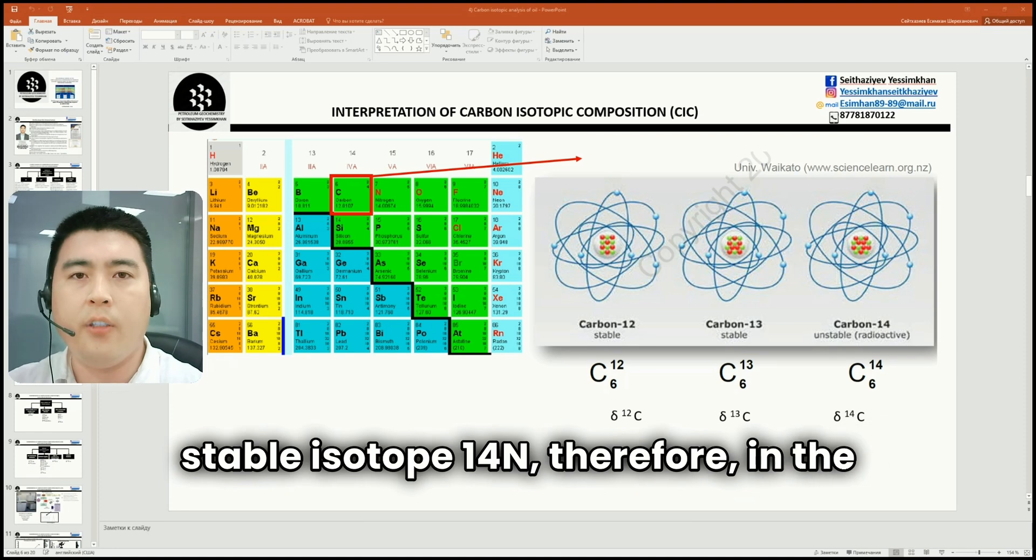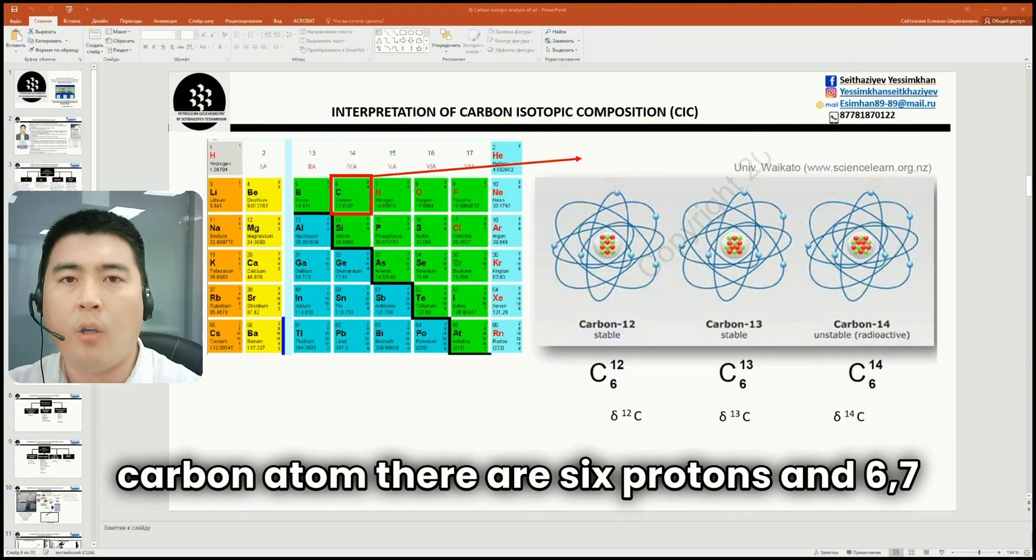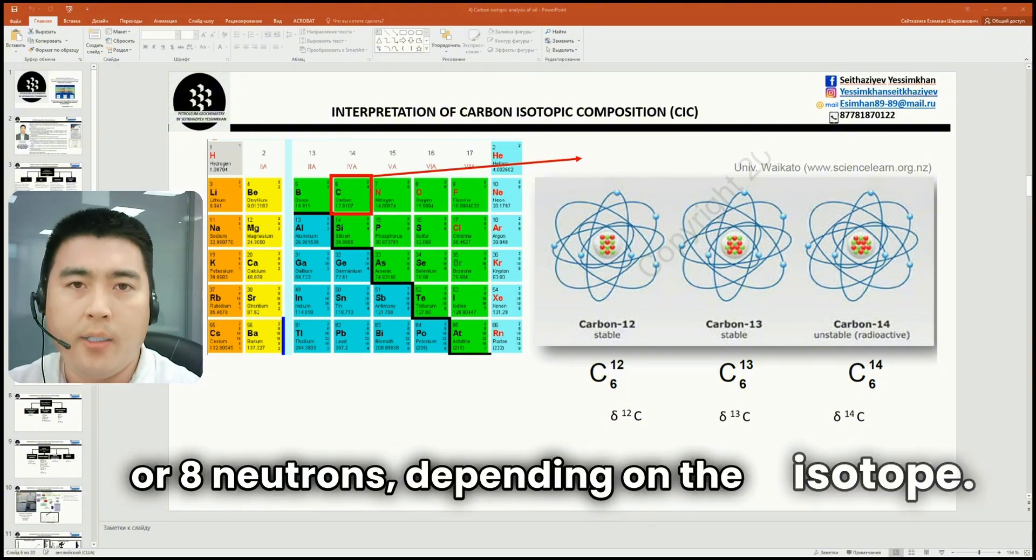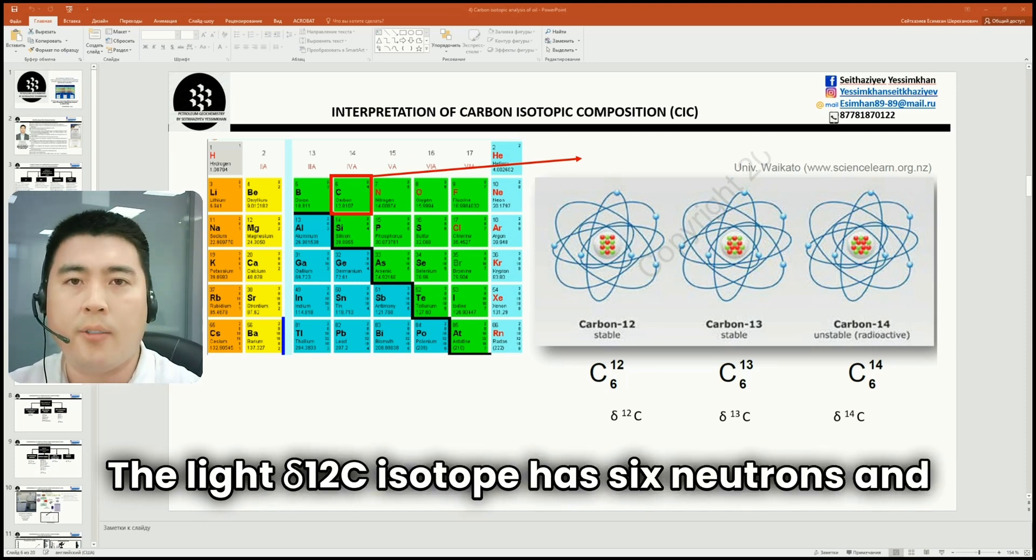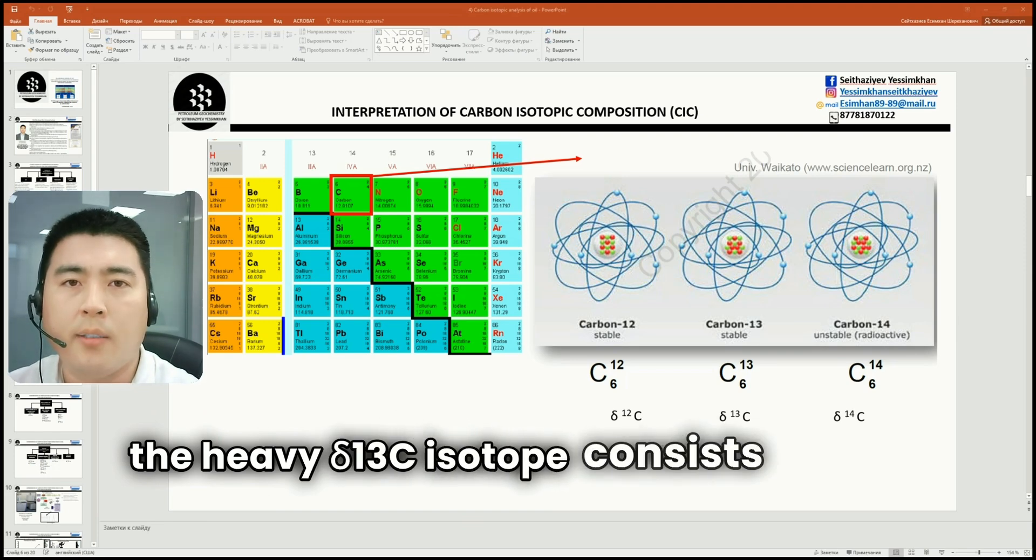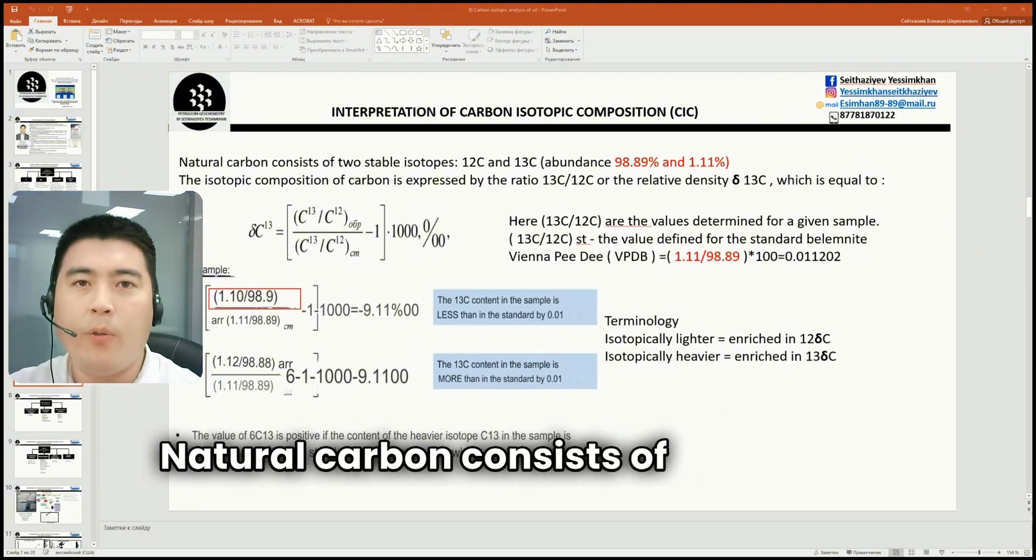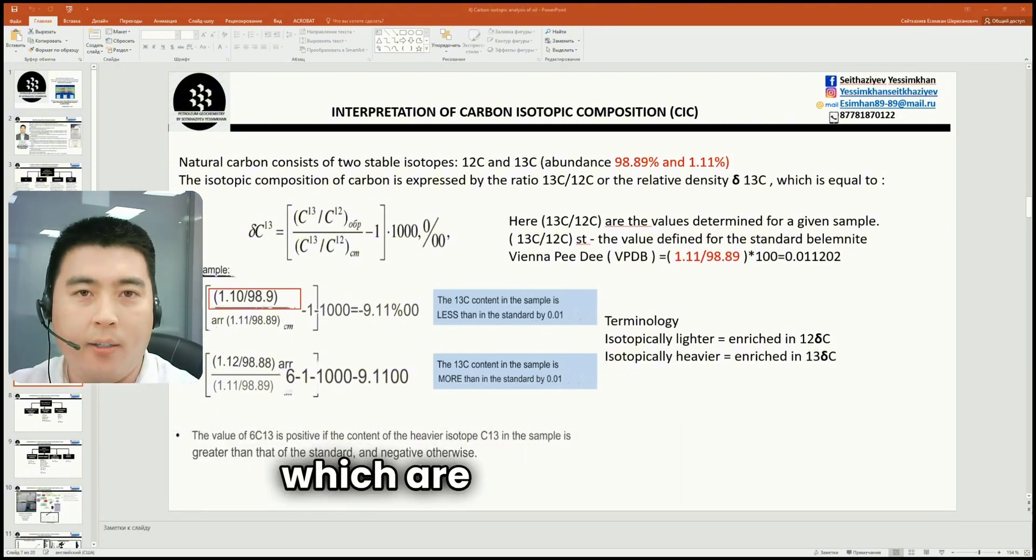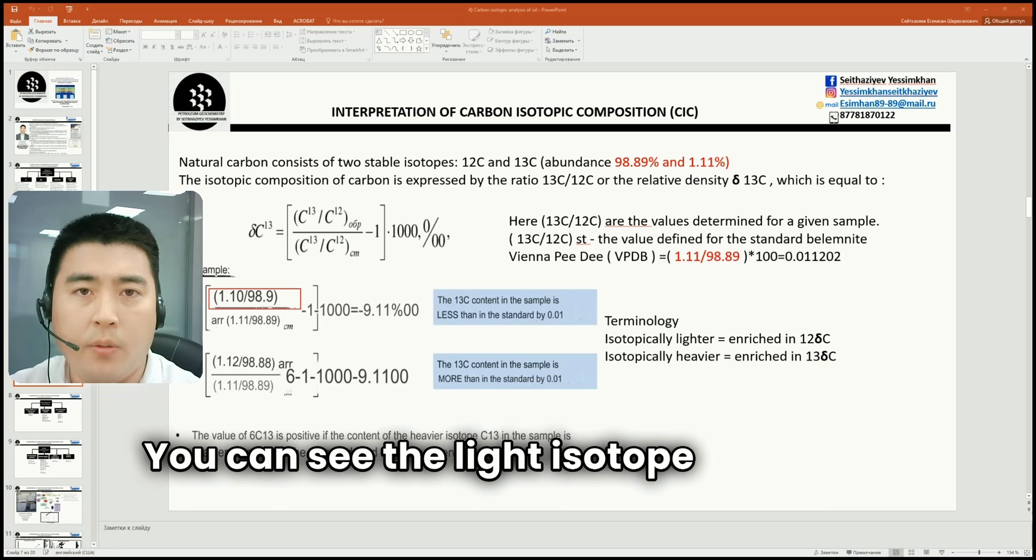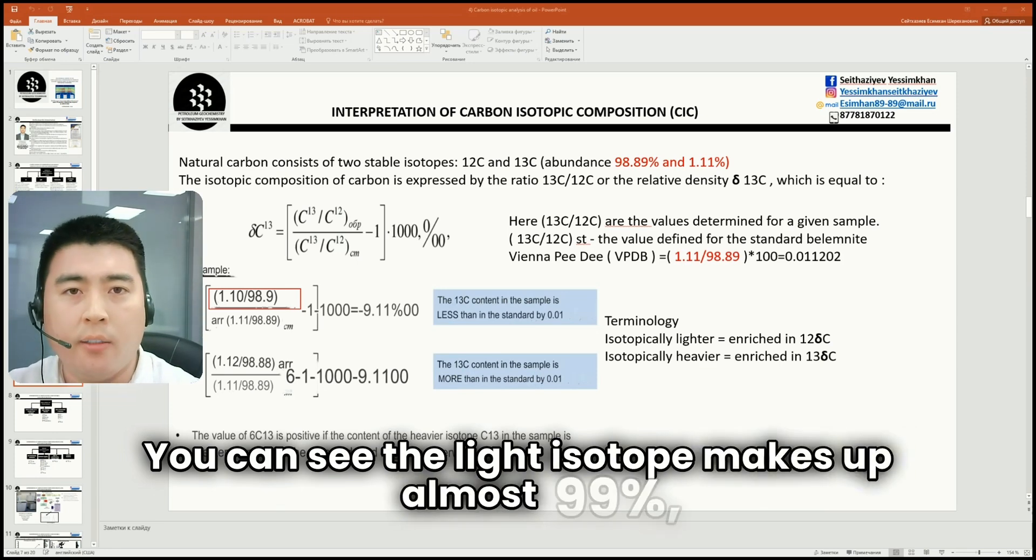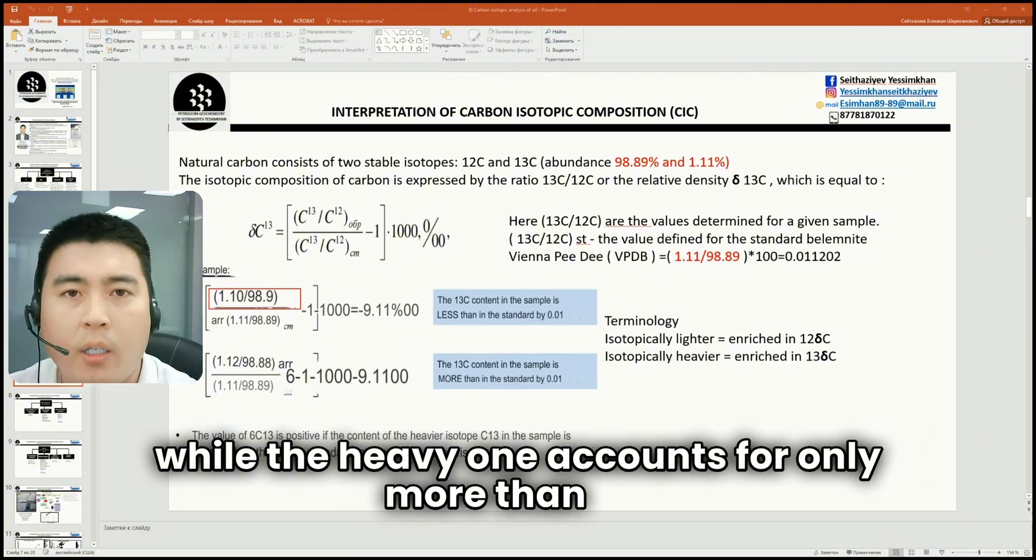Therefore, in the nucleus of the carbon atom, there are six protons and six, seven, or eight neutrons depending on the isotope. The light 12C isotope has six neutrons and the heavy 13C isotope consists of seven neutrons. Natural carbon consists of two stable isotopes, which are 12C and 13C. As you can see, the light isotope makes up almost 99 percent, while the heavy one accounts for only more than one percent.